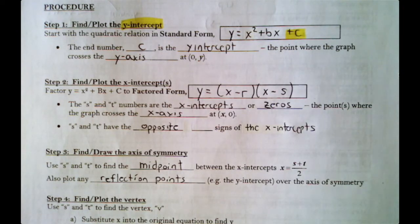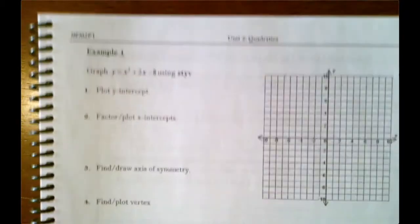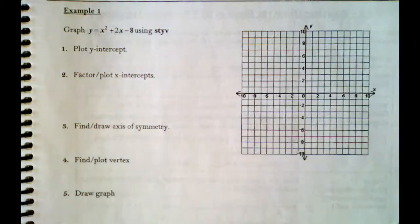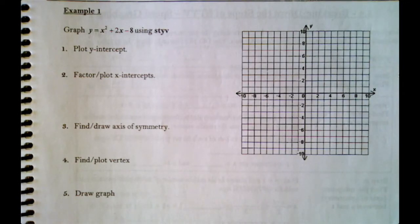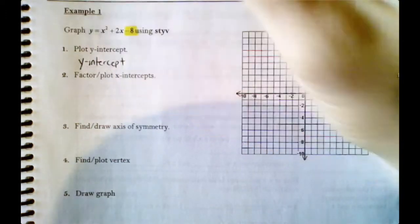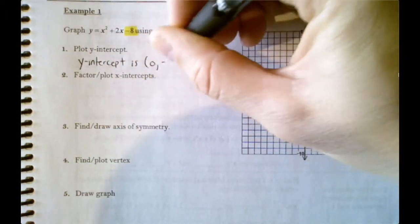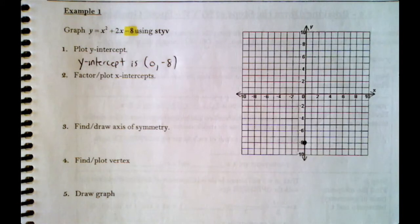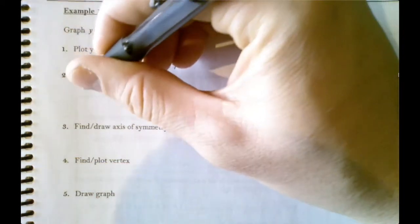Let's graph y = x² + 2x − 8 using the STYV method. First, we find the y-intercept. The number at the end is −8, so (0, −8) is our y-intercept. We go to the y-axis and put a dot — that's one point for our parabola.